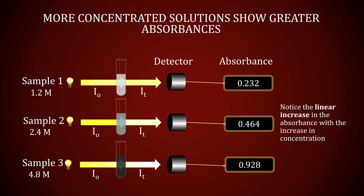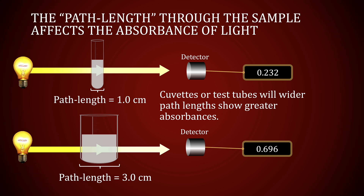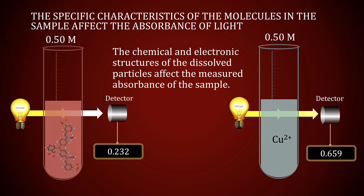Note that as the concentrations of the solutions increase in the diagram, the corresponding absorbance measurements increase in a linear fashion. The path length through the sample also affects the absorbance. Cuvettes or test tubes with larger path lengths allow for more interaction of the light with the sample molecules; therefore, the sample molecules will absorb more light. And finally, the particular characteristics of the sample molecules themselves — namely their electronic or molecular structures — will determine the absorbance of the light in a particular range of the electromagnetic spectrum.